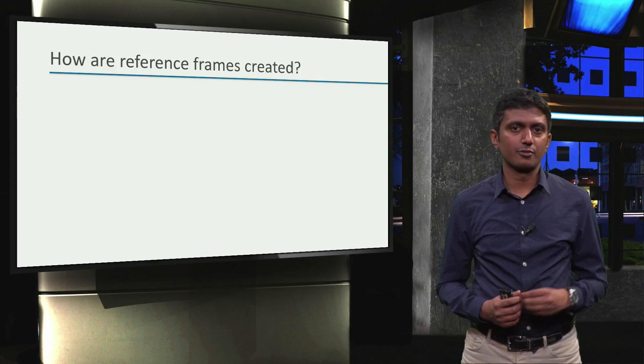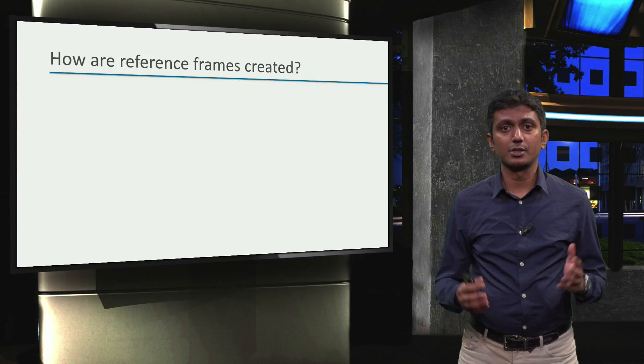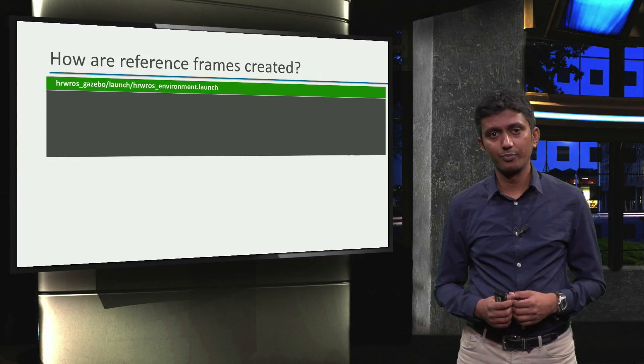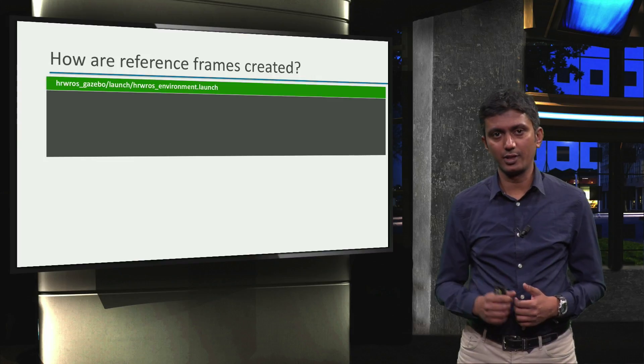Now, the second source of information, the robot_description parameter, which is populated from the Xacro files we made in week 2. We again look at a snippet from the hrwros_environment.launch file.